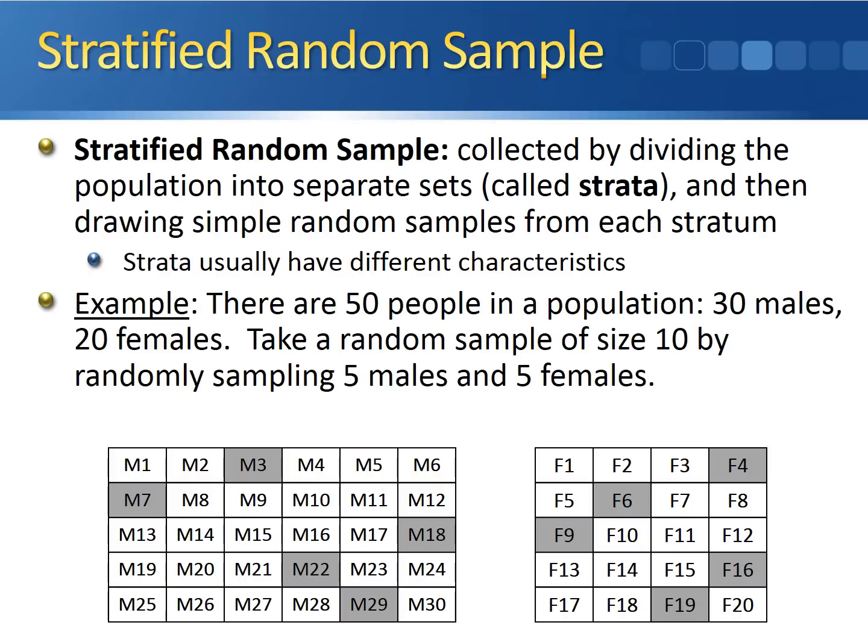This is an example of a stratified random sample because we first broke it down into the two strata and then we took a simple random sample from each of the two different groups.